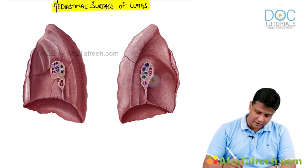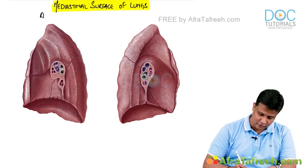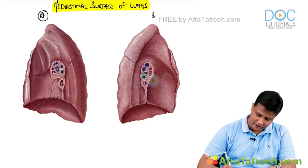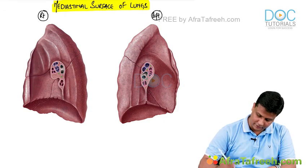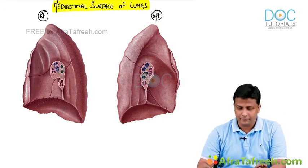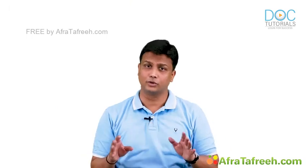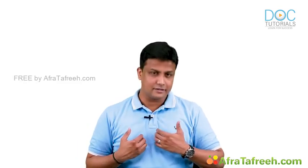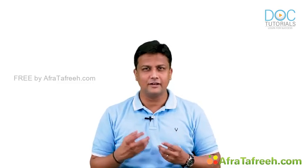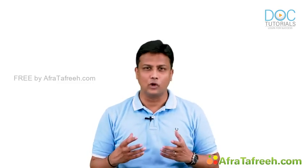In this diagram, you can easily identify the mediastinal surface of the right lung and the mediastinal surface of the left lung. One thing to begin with: whether it is the right lung or the left lung, two structures will be common for both — that is the trachea and esophagus. They are passing exactly in the middle, which is why trachea and esophagus are related to the mediastinal surface of both the right and left lungs.